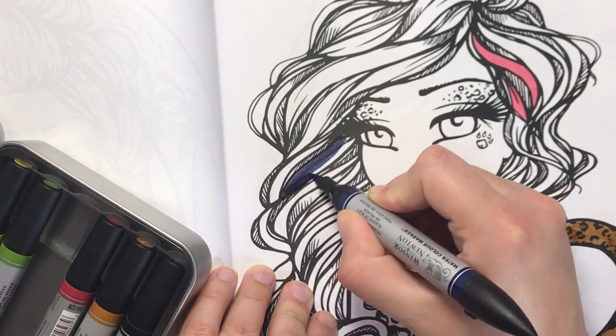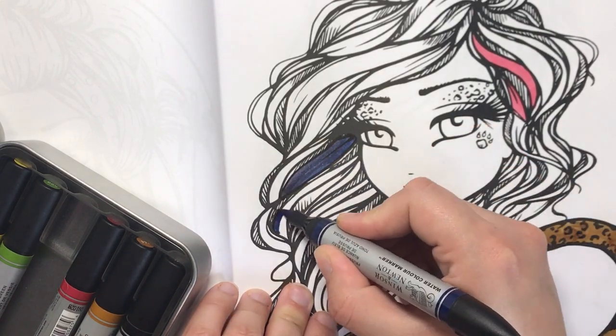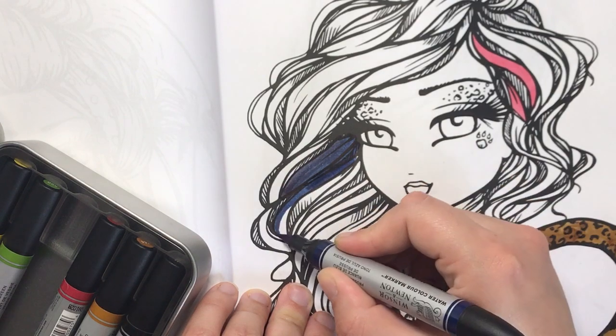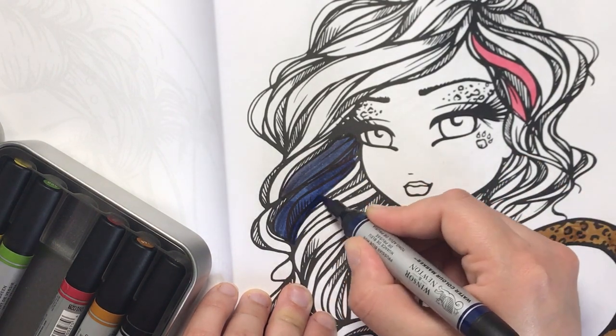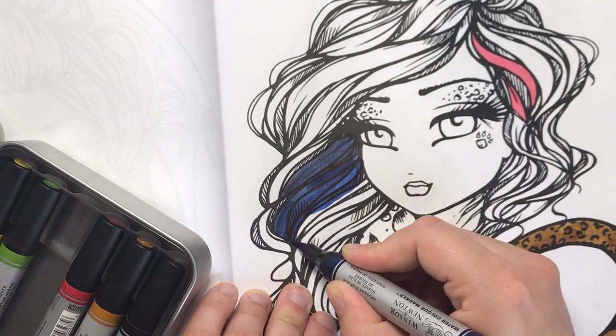As you can see, the lay down is so smooth. It doesn't really look streaky at all, and the faster you obviously go, the less streaks you're going to get because it's still wet.